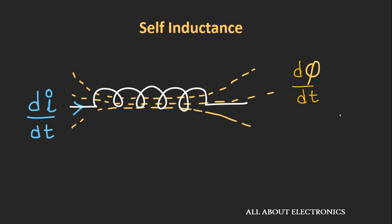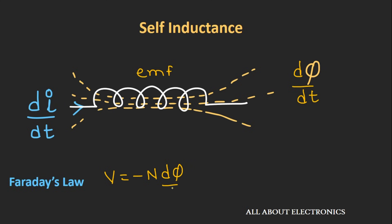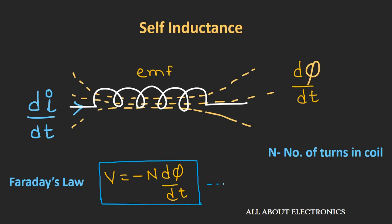This time-varying magnetic flux produces the EMF or a voltage in this coil. According to Faraday's law, the voltage induced in this coil can be given as V = -N dφ/dt, where N is the number of turns in the coil. Let's call this equation number 2.